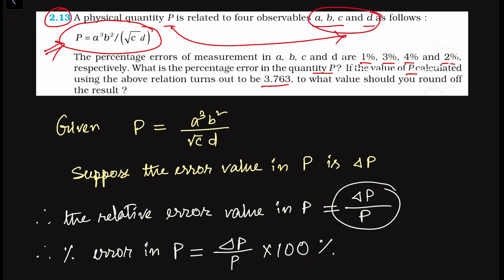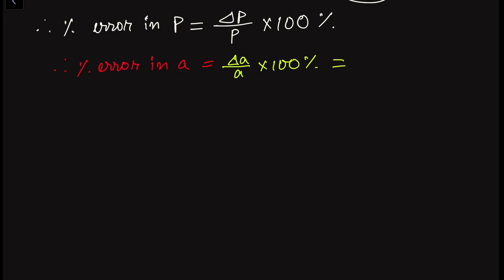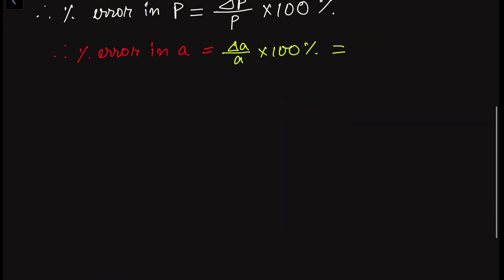The observables A, B, C, and D are given in percentage form. We have to calculate the percentage error in each. The percentage error in A is delta A divided by A into 100, and this is given as 1%.